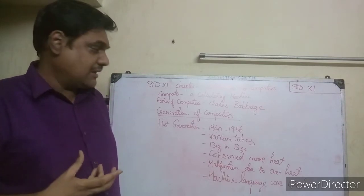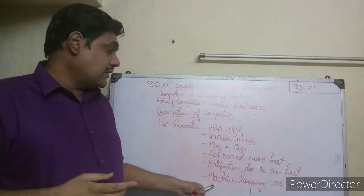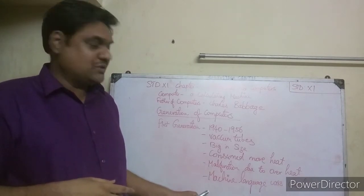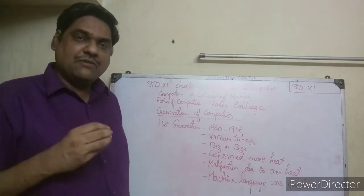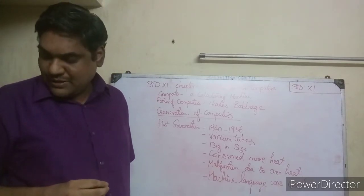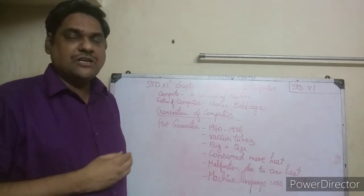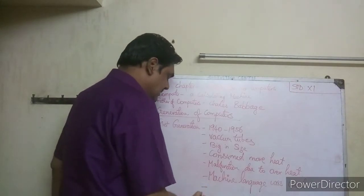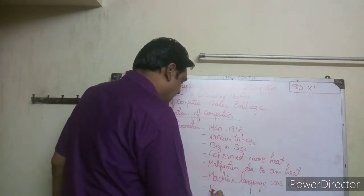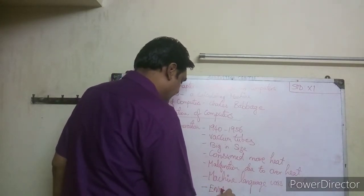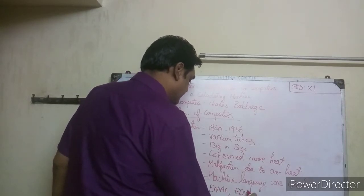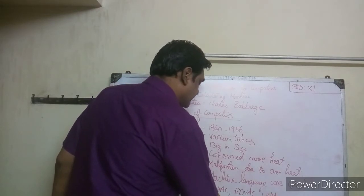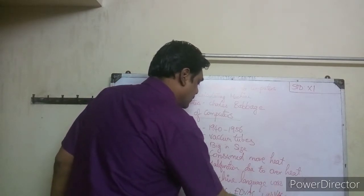First generation computers used machine level language - which is binary language using zeros and ones. Examples of first generation computers are ENIAC, EDVAC, and UNIVAC 1. These were the computers of that era.